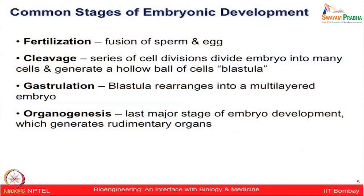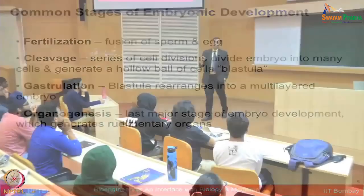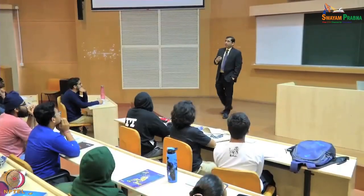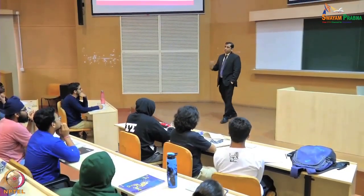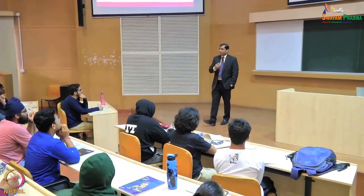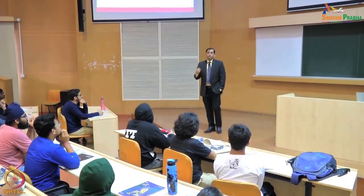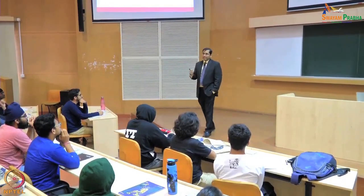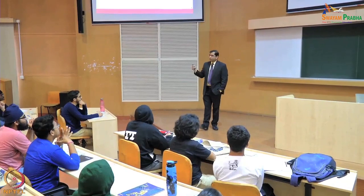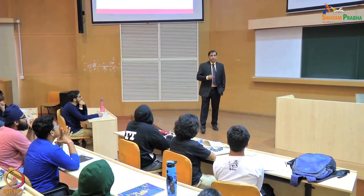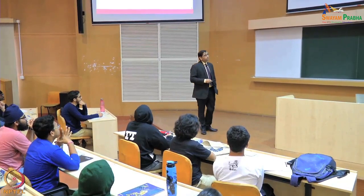Gastrulation is a process when the blastula has rearranged cells into multiple cell layers. The inside part is hollow and contains some liquid — mainly surrounded by outer multi-layer cells. Then organs have to be formed in a process known as organogenesis. Importantly, the fate of organs is decided well ahead of the newborn stage, and one can start monitoring those at a very early stage of embryonic development.